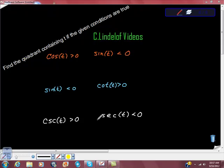Okay, so this is college trig. Find the quadrant containing t, theta, if the given conditions are true. So what quadrant are we in if cosine of t is greater than zero and sine of t is less than zero?